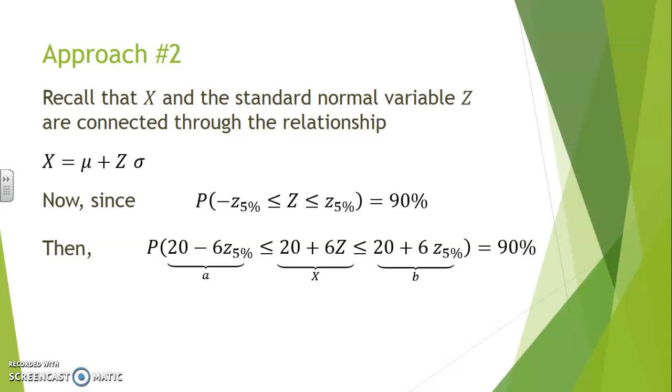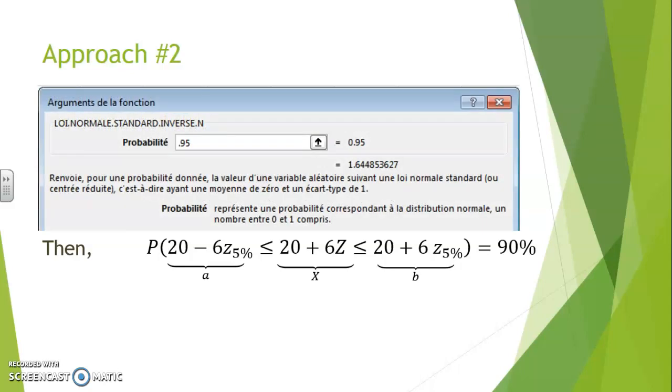And therefore, a and b symmetrically counted from 20 can act as the a and the b. According to our standard normal law, Z 5% is worth 1.64.